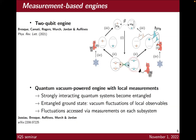We want to combine all of this in the work we are doing here. Our idea is to have a quantum vacuum powered engine with local measurements. We are interested in the case where you have strongly interacting quantum systems which become entangled — especially the case where you have an entangled ground state. When you're in the ground state and it's entangled, the local description breaks down and you will have vacuum fluctuations of local observables. Our idea is to access these fluctuations by performing local measurements on each subsystem, which may put us in a state of higher energy that we can then extract through local operations.